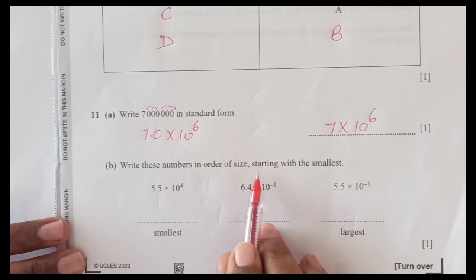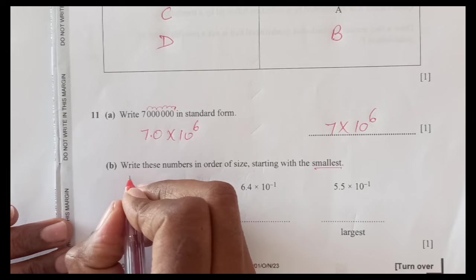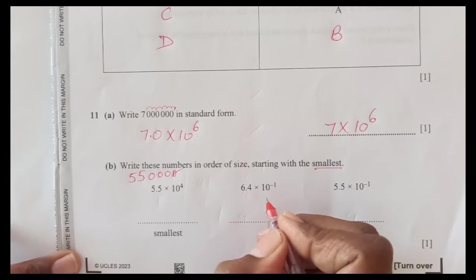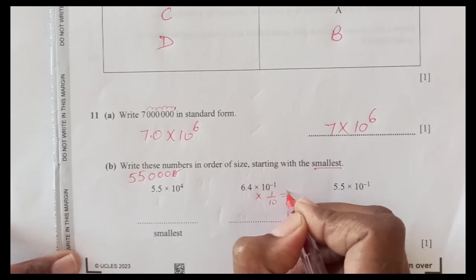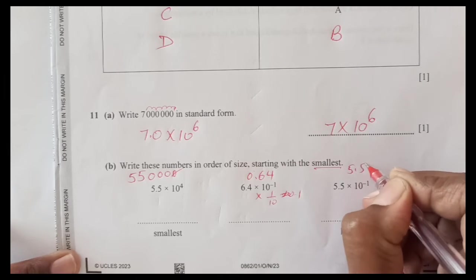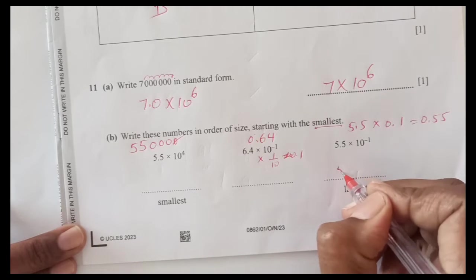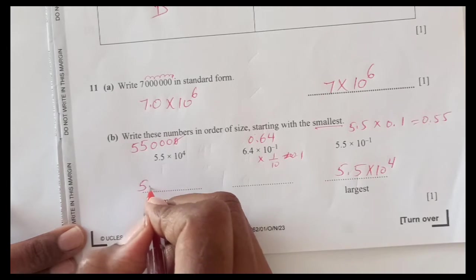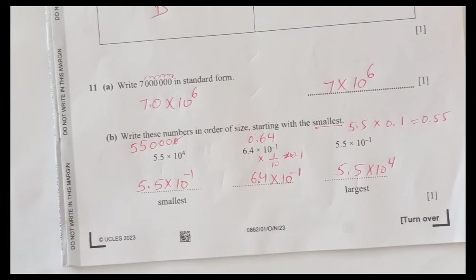Write down these numbers in order of size starting with the smallest. All these are different, so we have to do a little calculation here. This is 55 then there are 4 zeros: 1, 2, 3, 4, so 1 decimal is here, so 1 zero will be cancelled, so 55,000. This is 6.4 times 10 raised to power minus 1, times 0.1, so this will become 0.64. And this is 5.5 times 0.1, it will make it 0.55. The biggest one is here 5.5 into 10 raised to power 4, and the smallest one is 0.55. The original one is 5.5 times 10 raised to power minus 1, and this will come in the middle 6.4 times 10 raised to power minus 1.